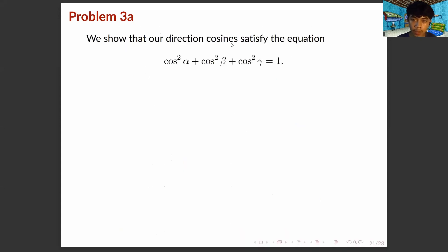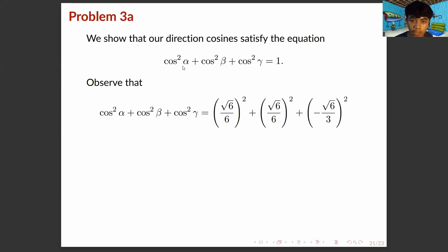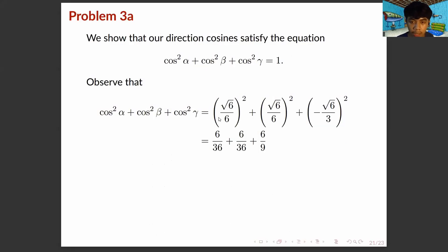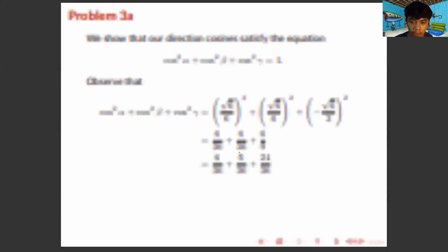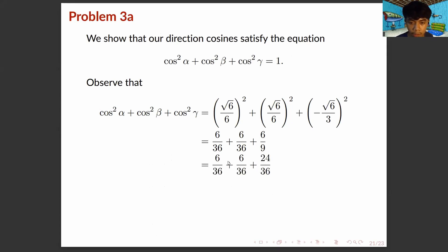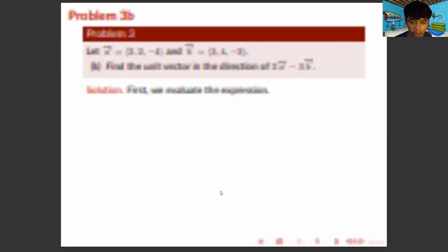We show that our direction cosines satisfy the identity. Substituting cosine alpha, beta, and gamma: (root 6 over 6) squared is 6 over 36; same for cosine beta. Then (negative root 6 over 3) squared is 6 over 9. Converting to a common denominator, we have 6 plus 6 plus 24 over 36 equals 36 over 36 equals 1. The result follows.